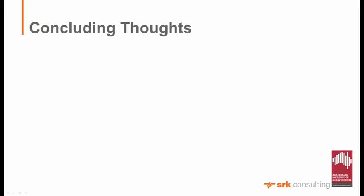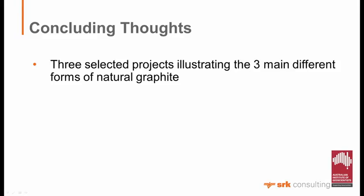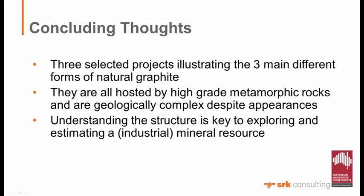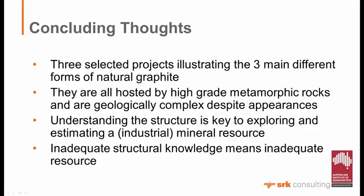Just some concluding thoughts as a takeaway. Three selected projects illustrating the three main different forms of natural graphite: amorphous, flake, and vein. They're all hosted - with the exception of Kalimantan which is Permian - by high-grade metamorphic rocks. To me, the most important thing is understanding the structure. Before you start any resource estimation or domain modelling, you really need to understand structure first. Inadequate structure, in my opinion, means inadequate resource.